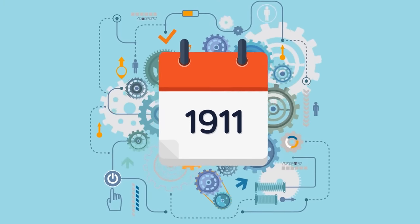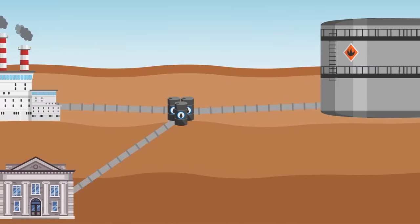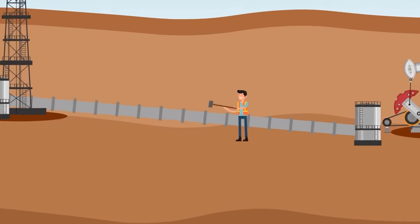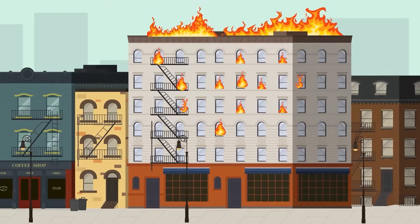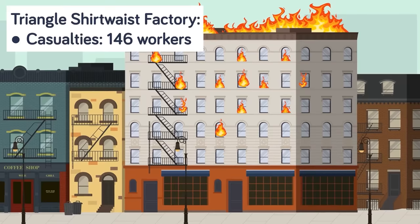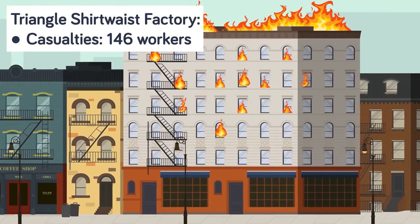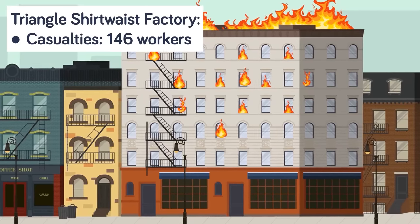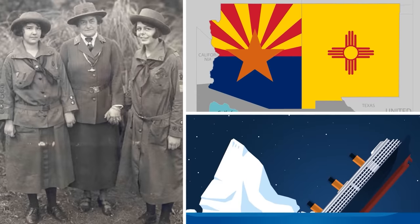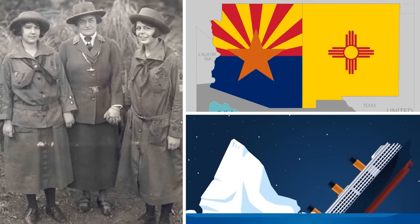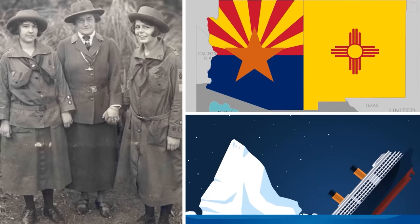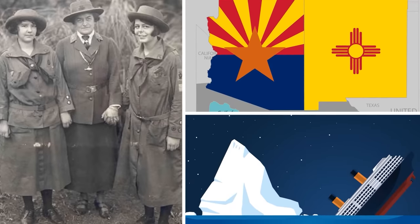1910s. Taft's presidency was dominated by economic and labor affairs. More reforms were passed, and the Supreme Court broke up the massive Standard Oil Corporation in 1911. That same year, the horrible Triangle Shirtwaist Factory fire in New York killed 146 garment workers, bringing new attention to the plight of the working class. New Mexico and Arizona were admitted as states, the Girl Scouts were founded, and the sinking of the Titanic, taking over 2,000 passengers with it, shocked the world. But this next election was going to be the craziest yet.